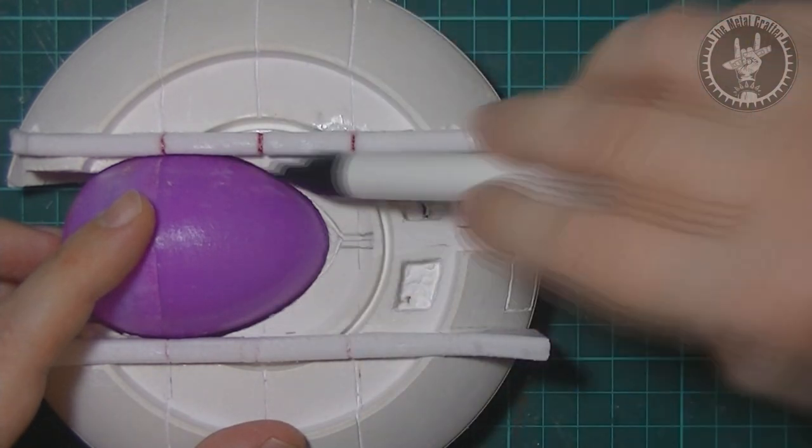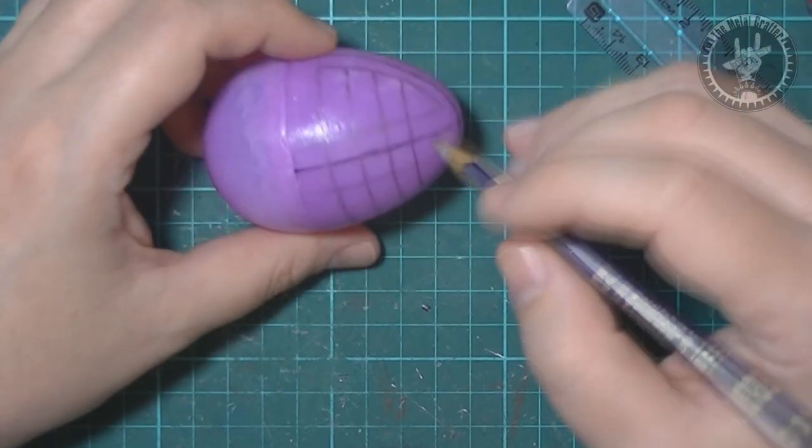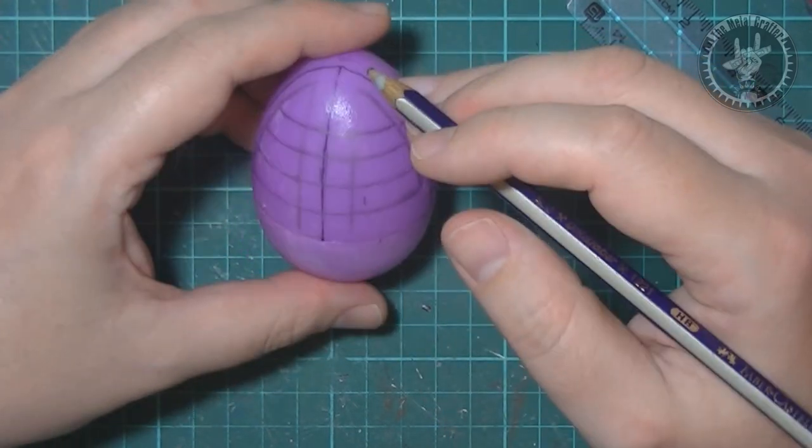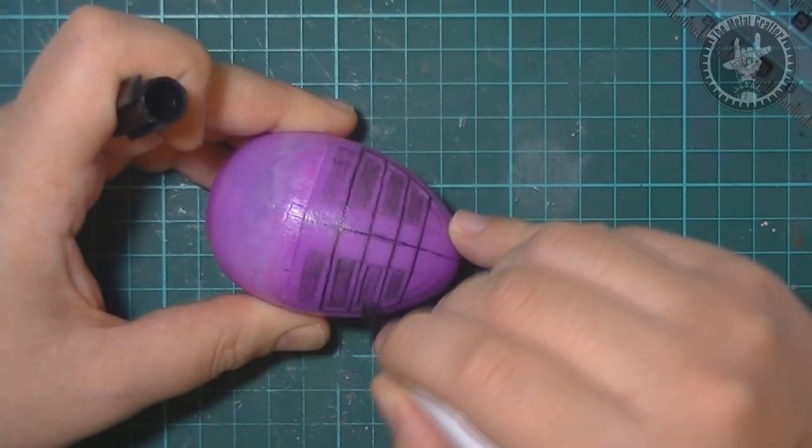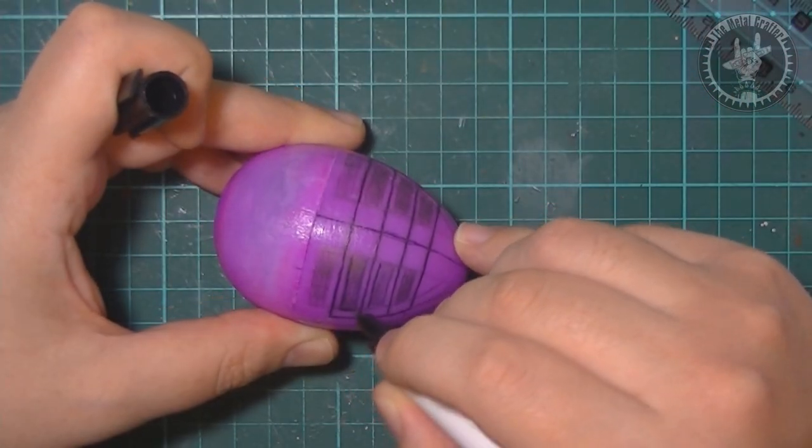I started working on the cockpit, defining the layout and marking the lines with a marker. Then used a sharp tool to carve the lines and I heated a knife to make the holes.